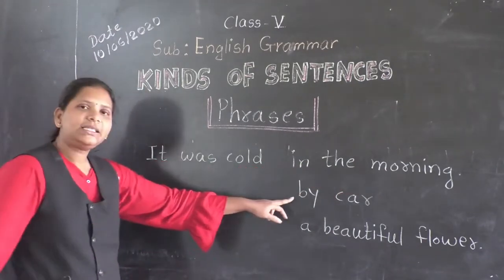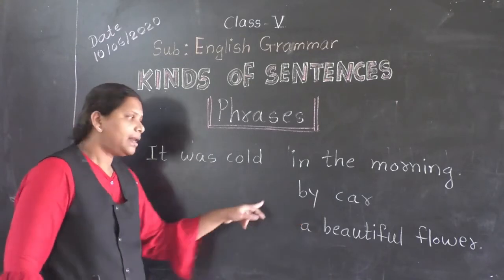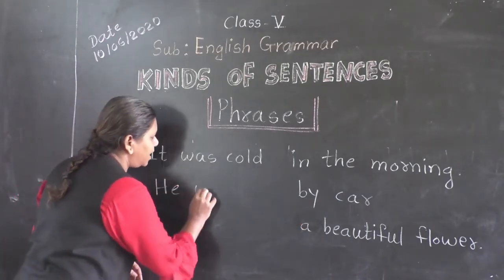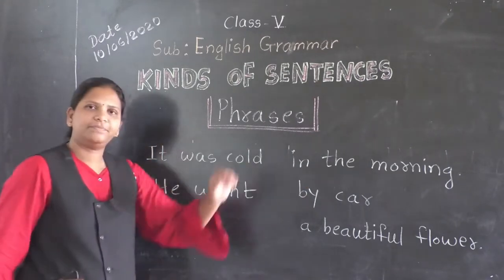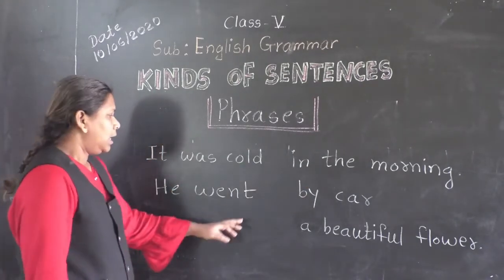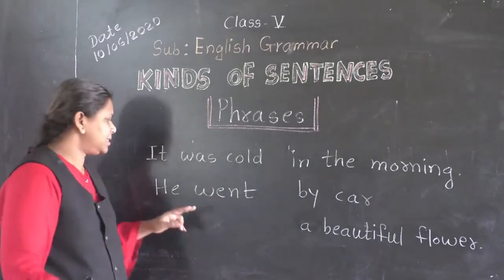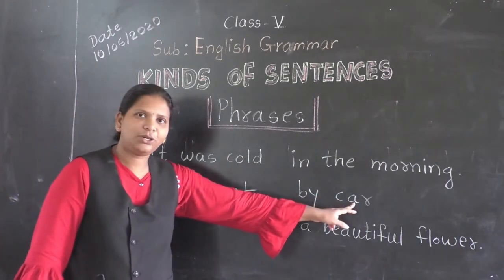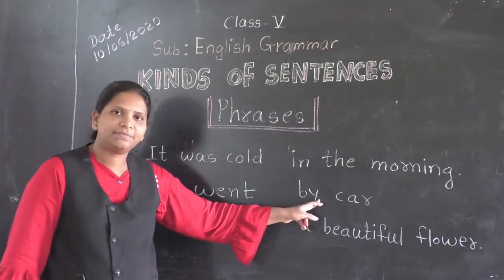Now the second example: if I write 'by car,' and then add two more words — 'He went by car.' Understood? So this becomes a complete sentence.